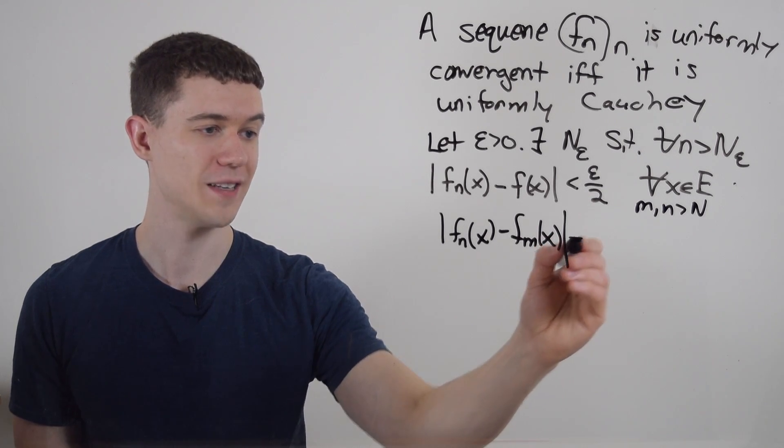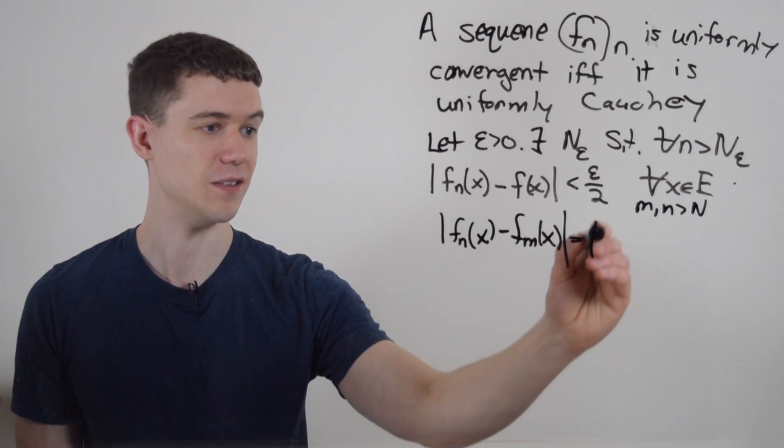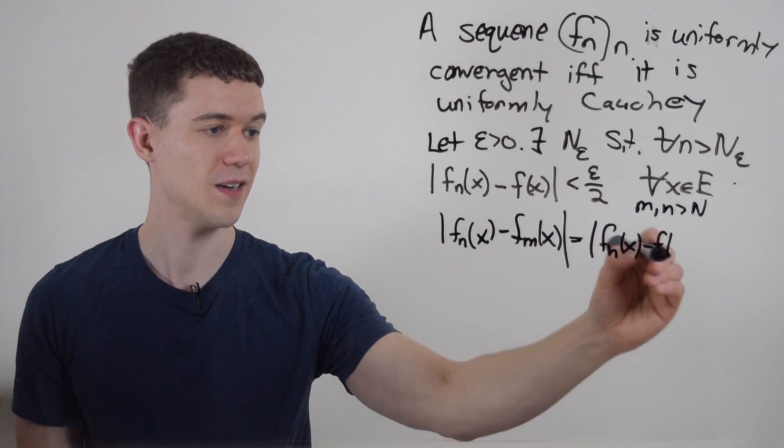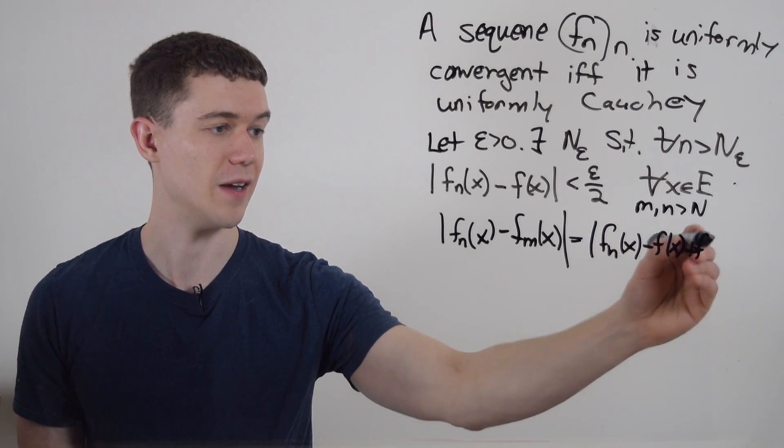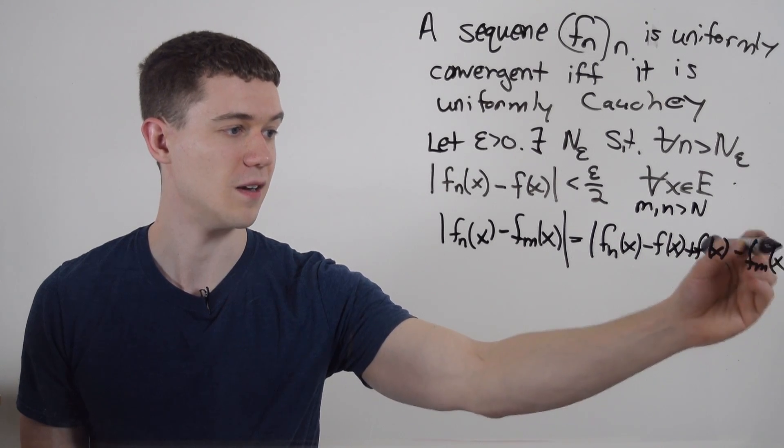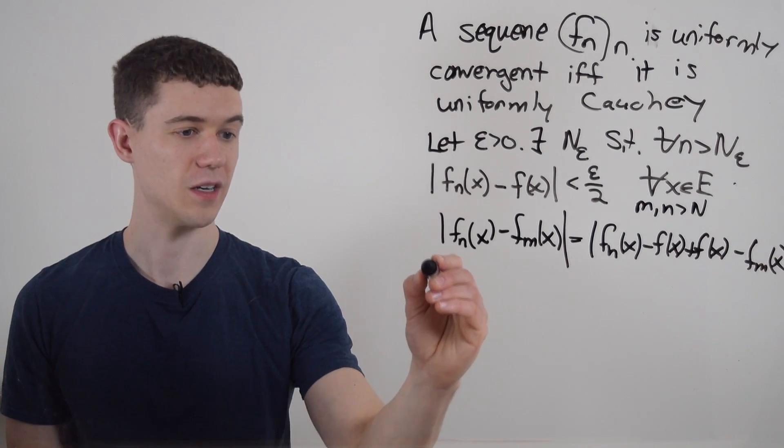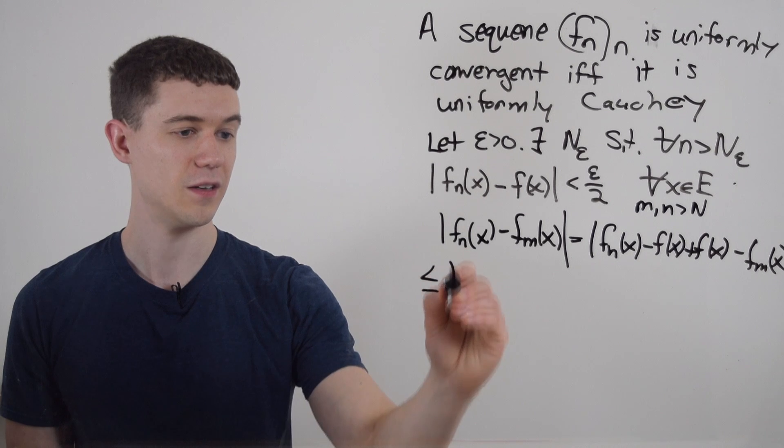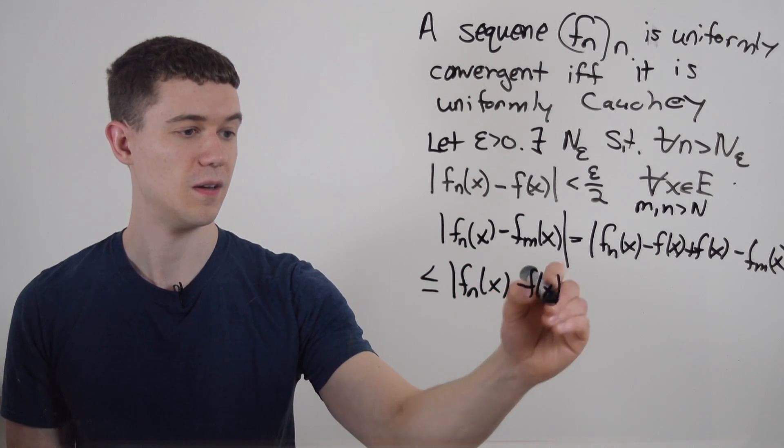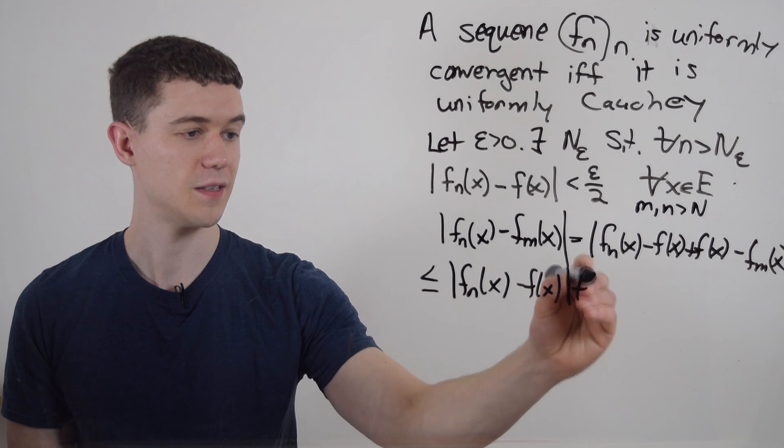I'm going to do the classic real analysis trick where I add by 0. So I'll subtract f of x in here, and then I'll also add f of x in here. And then I still have minus f sub n of x. Then what I can do is use the triangle inequality to split this up. I'll split it up into the first part plus the second part.